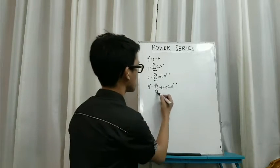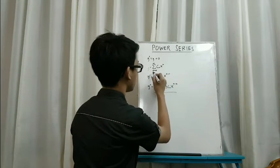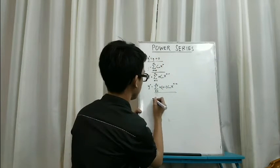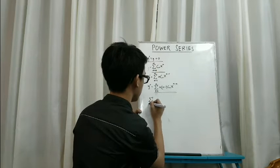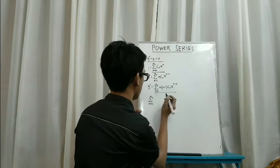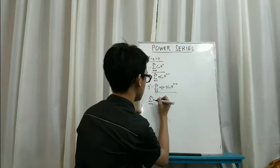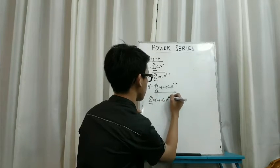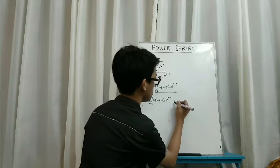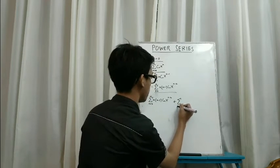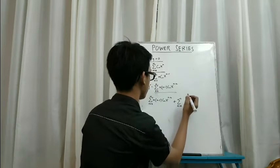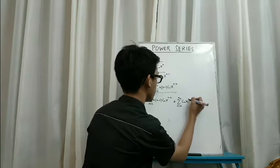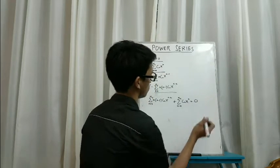We can substitute these expressions into the equation. We now have the summation from n equals 2 to infinity of n times n minus 1 times c sub n times x raised to n minus 2, plus the summation from n equals zero to infinity of c sub n times x raised to n, equals zero.